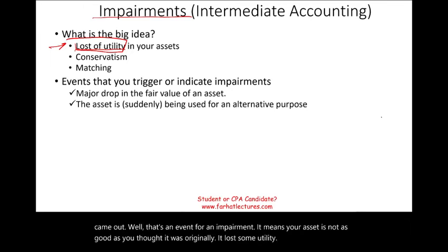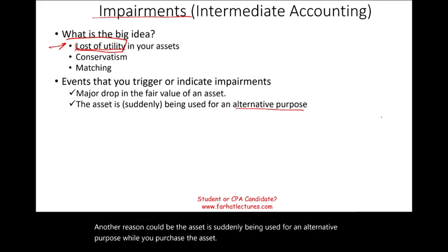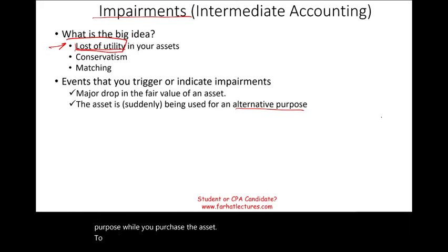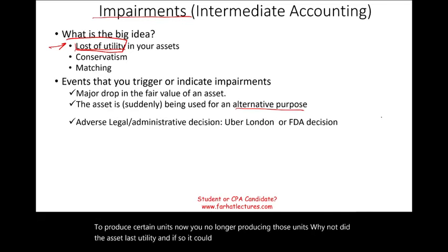Another reason could be that the asset is suddenly being used for an alternative purpose. You purchased the asset to produce certain units, but now you're no longer producing those units. Did the asset lose utility? If so, it could be a possible impairment.